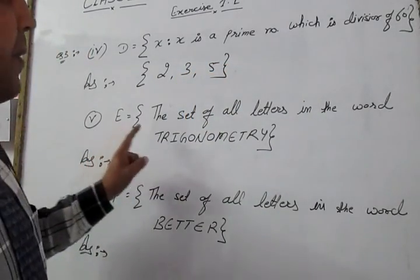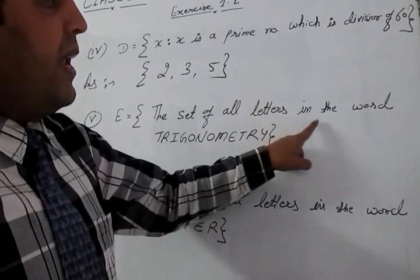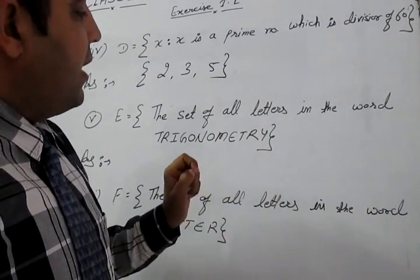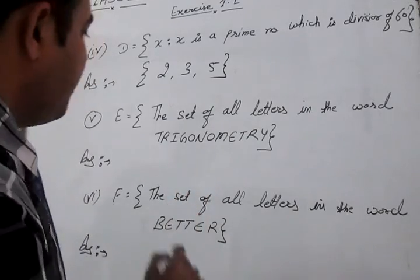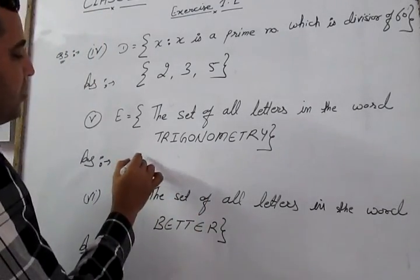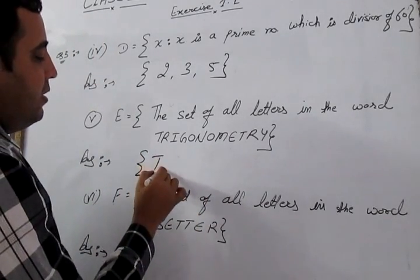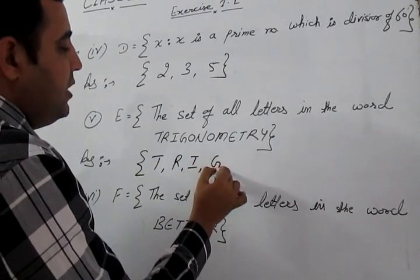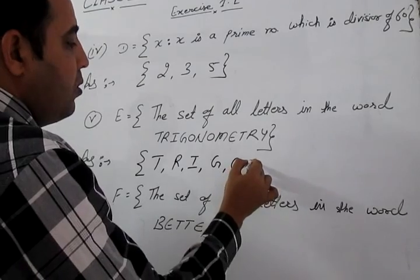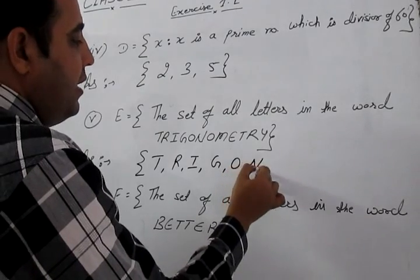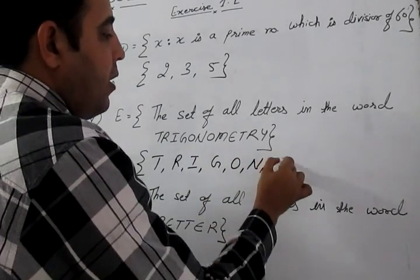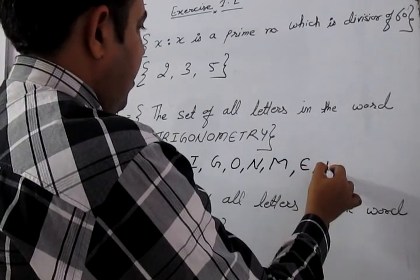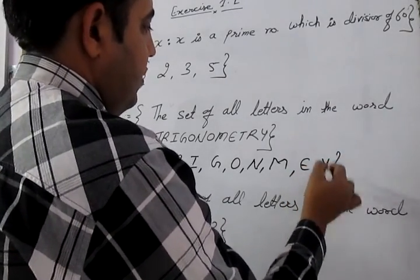Part E: the set of all letters in the word 'trigonometry'. As we know, elements of sets are never repeated. So we write: T, R, I, G, O, N — do not repeat O — M, E, Y. This is the answer.